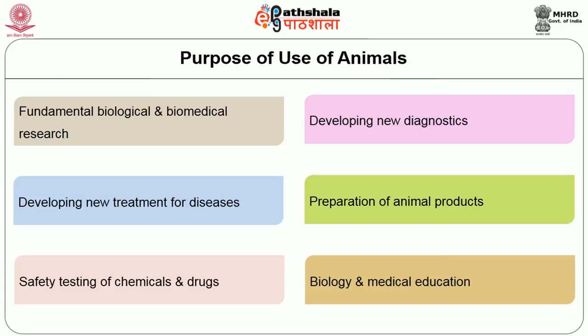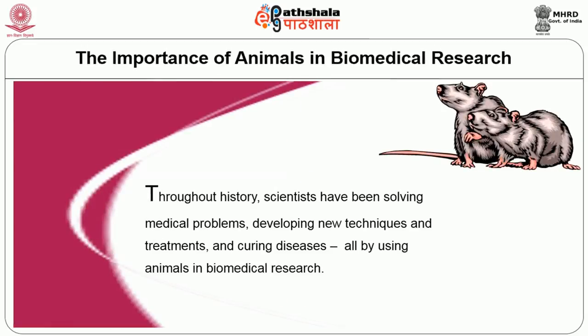If there are many products being developed — chemicals, drugs, food products — any product has to go through safety testing in animals first before moving on to human beings. There are new diagnostics and new animal products being developed, and all these have gone through animal testing first. In biology and medical education, animals were used to a great extent many years back, but now that use is restricted. The importance of animals in biomedical research is known to many — scientists have been solving problems, developing new techniques and treatments, all by using animals in biomedical research.